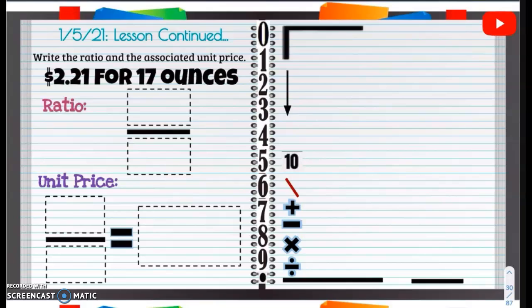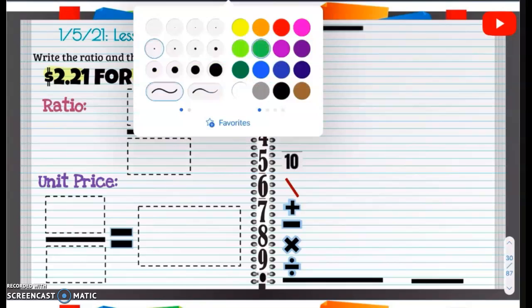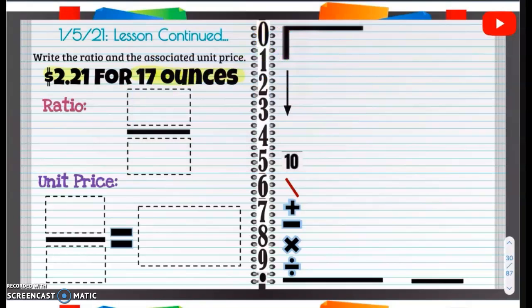So remember, when we're dealing with money, unit rates, or unit prices, we're going to put the money on top. It says $2.21 for 17 ounces. So remember, money on top. We have our dollars, $2.21 for 17 ounces.